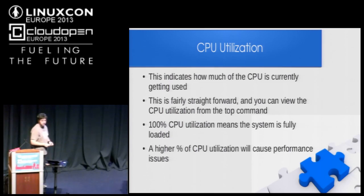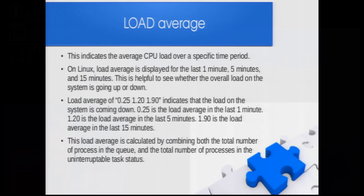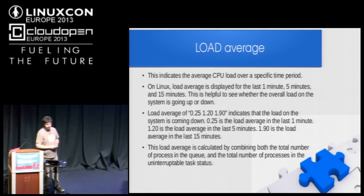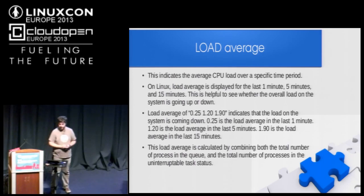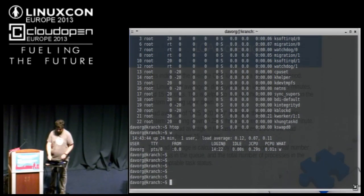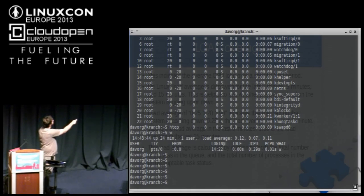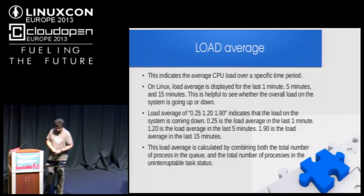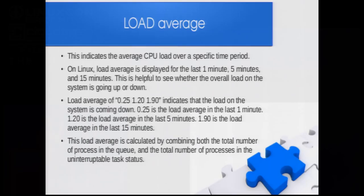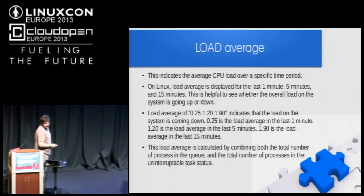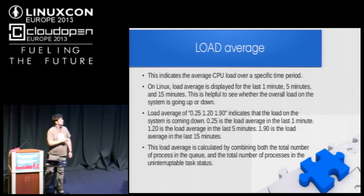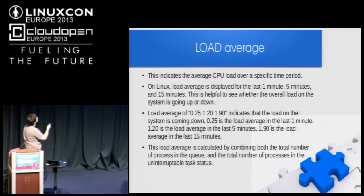A high percent of CPU utilization will cause performance issues. Load average indicates the average CPU load over a specific time period. On Linux, load average is displayed for the last one minute, last five minutes, and last 15 minutes. An example: load average of 0.25, 1.20, and 1.90 indicates that the load on the system is coming down, because 0.25 is the most recent (one minute), 1.20 is five minutes, and 1.90 is 15 minutes.